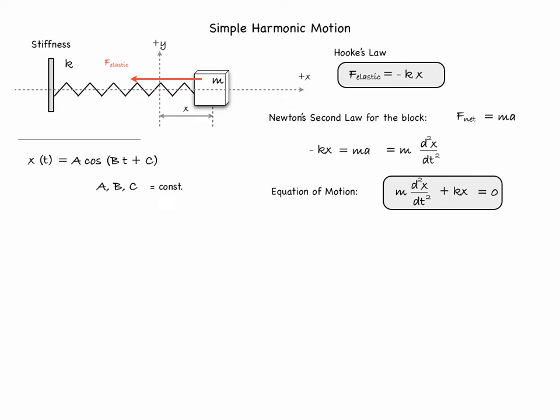Any mathematics reference book on differential equations instructs us that the solution to our equation must be in the form of either a cosine or sine function. Let's choose our solution to be in the cosine form. We write the displacement function as A cosine(bt + c), where A, b, and c are constants to be determined. We need the second derivative to plug into the equation of motion. The first derivative is minus bA sine(bt + c), and the second derivative is minus b² A cosine(bt + c).